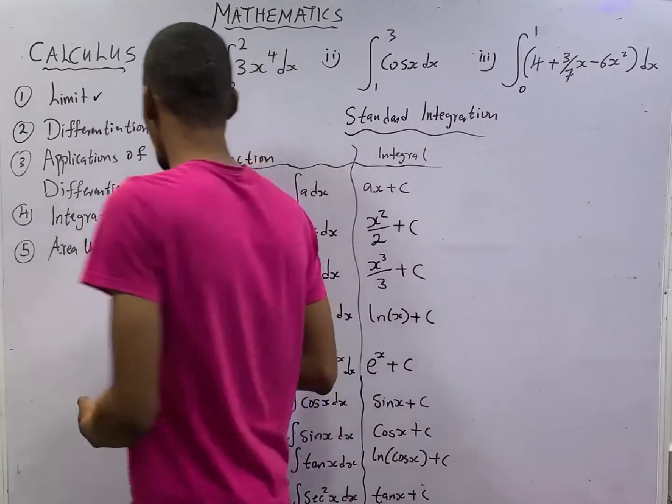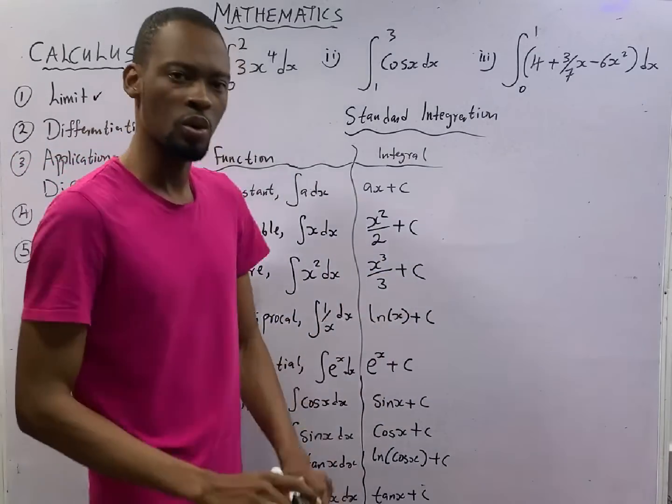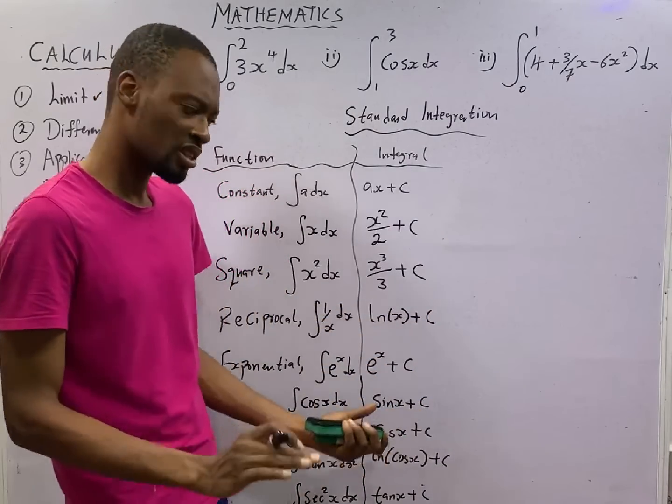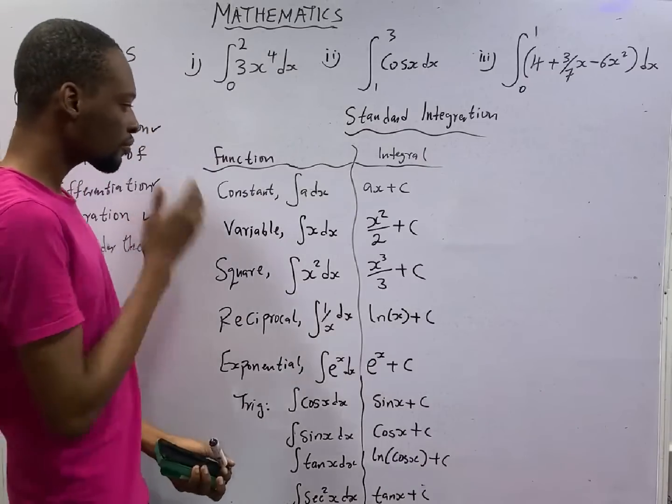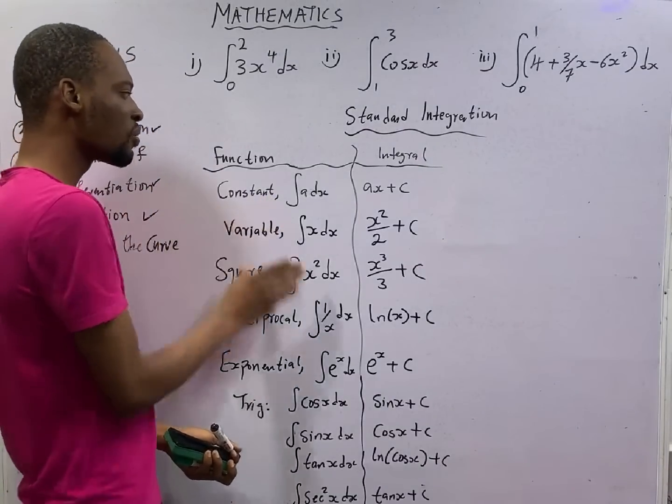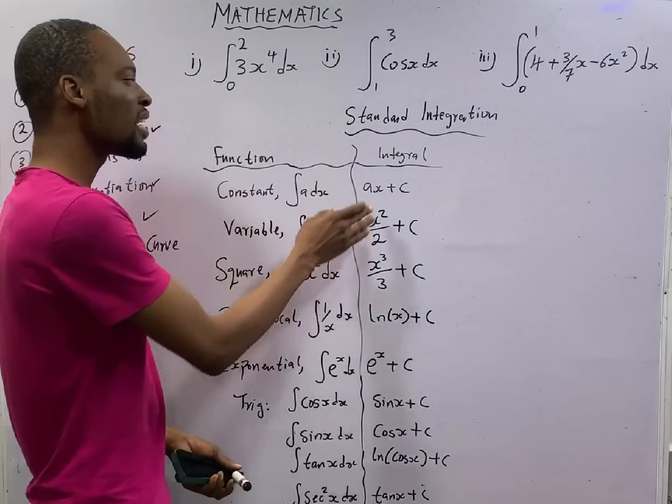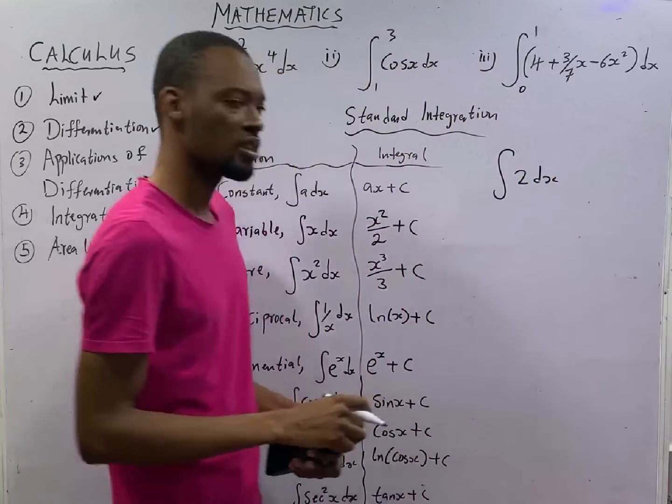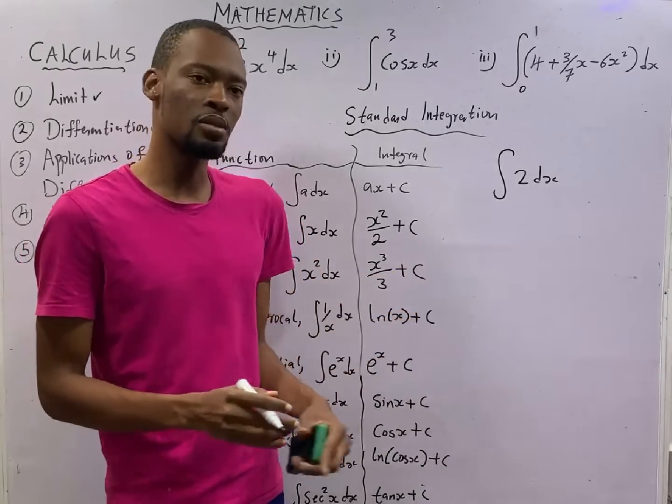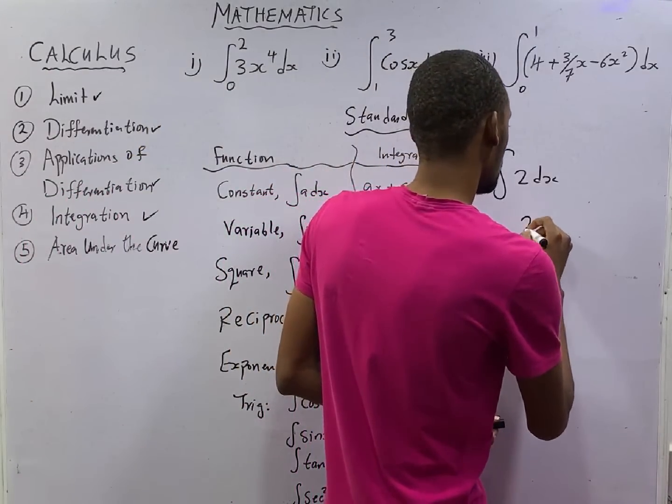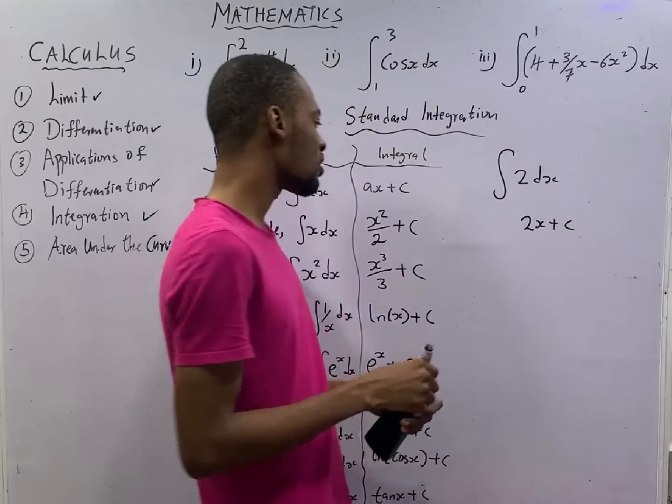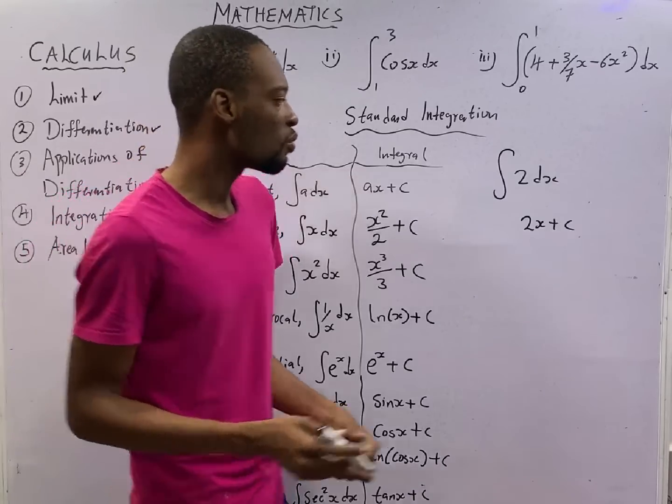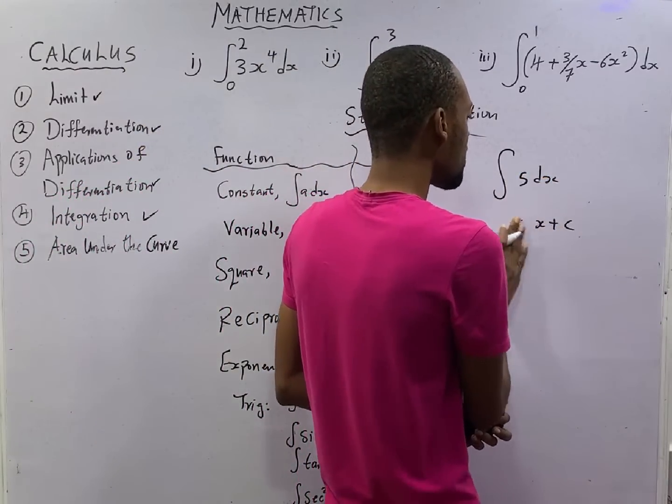For integration, these are standard integrals you must know. If you don't know these standard integrals, then you cannot follow the integration techniques. Look at this. When you integrate a constant, like a, you get as plus c. If I say integrate 2ds, 2 is a constant. So, to integrate a constant, you add s to it to get 2s plus c. Anytime you integrate, you must add a constant. I gave you the reason. What if I say 5 ds? That would be 5s plus c.